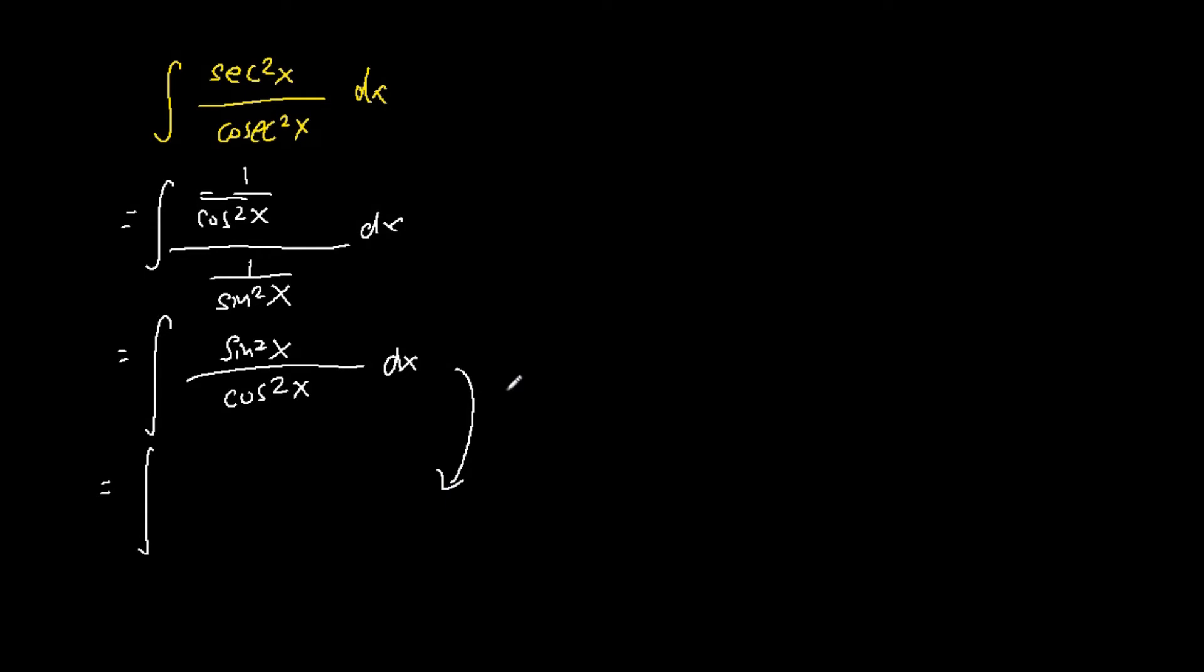Next, we are going to use the trigonometry identity, the Pythagorean theorem, that 1 minus cosine square x equals sine square x. So we substitute sine square x as 1 minus cosine square x.